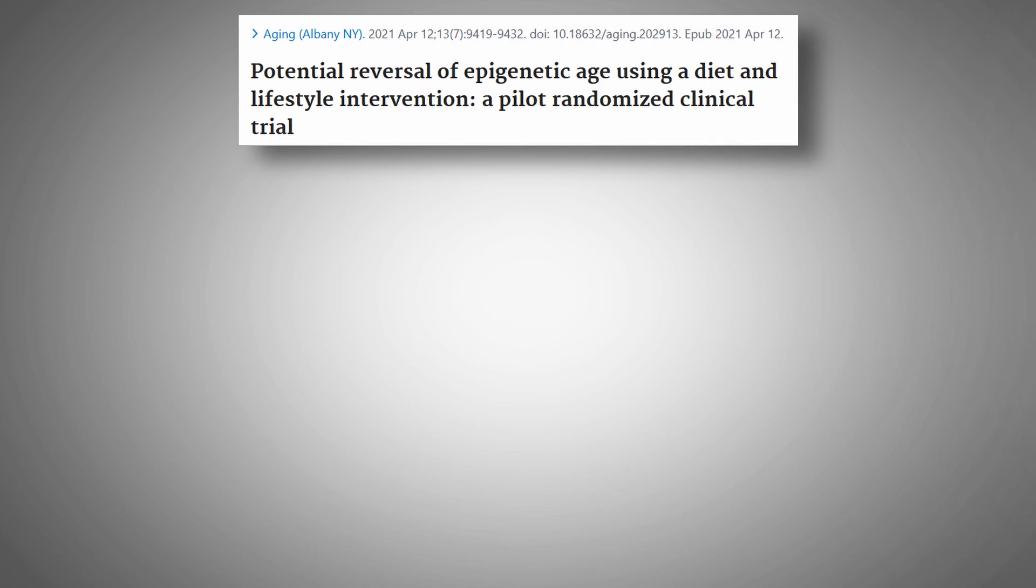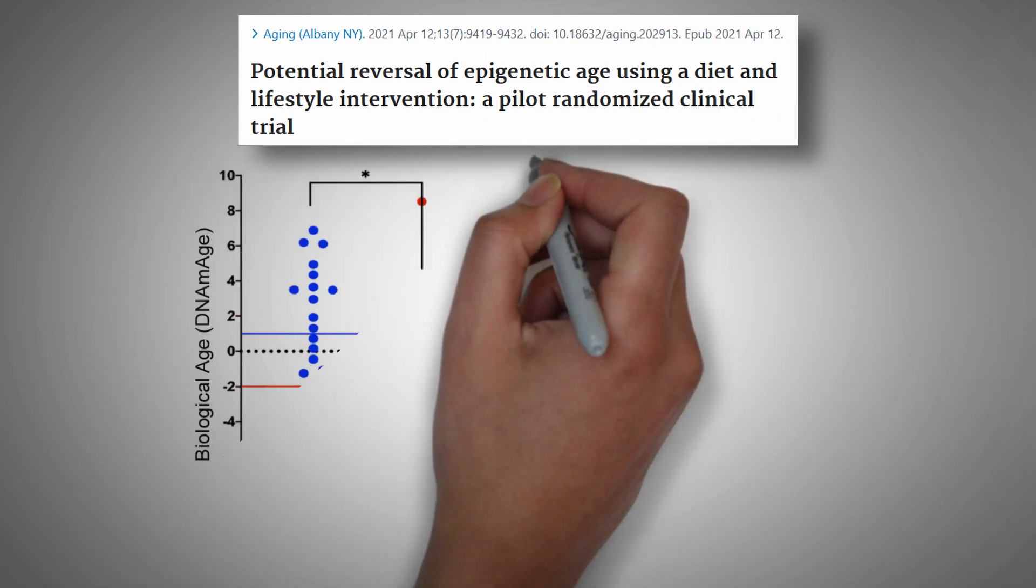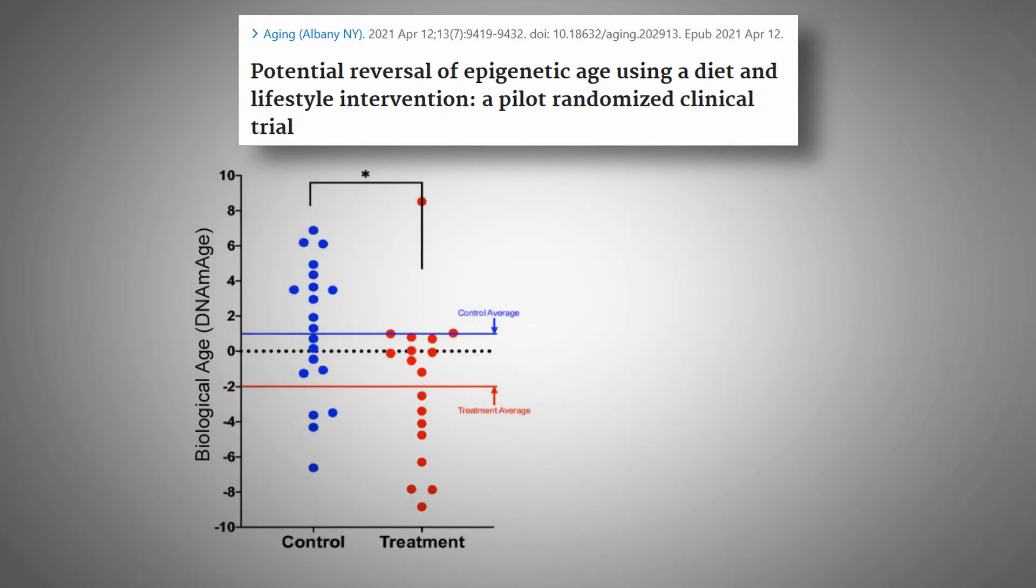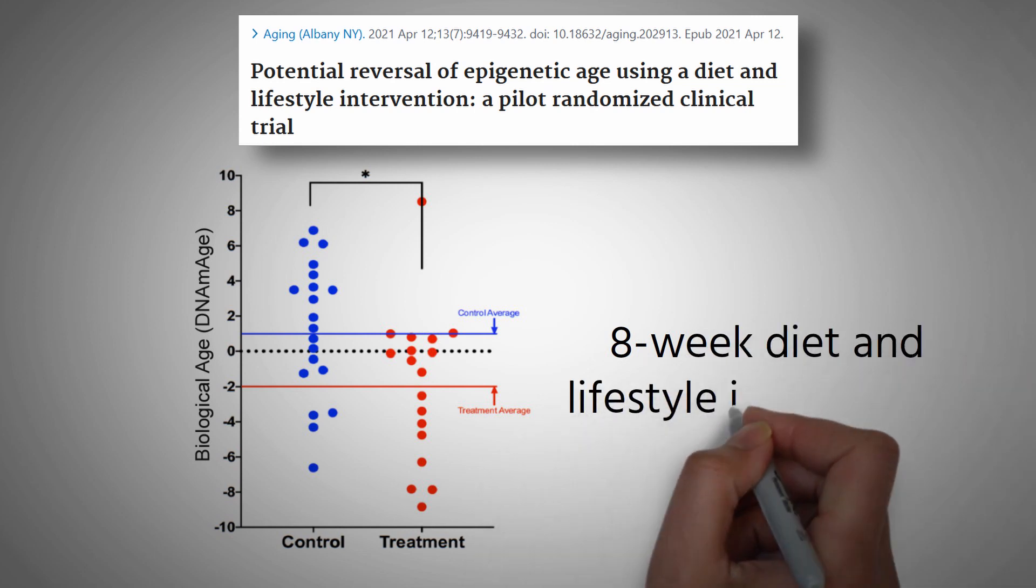A study published in the journal Aging could successfully decrease the biological age of 18 participants by 2 years with an 8-week diet and lifestyle intervention.